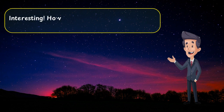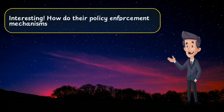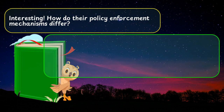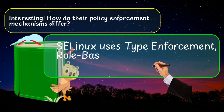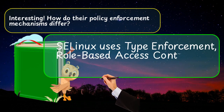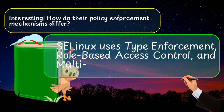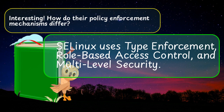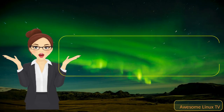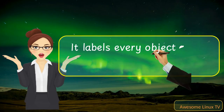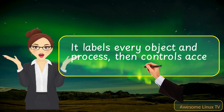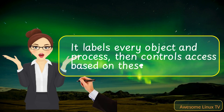How do their policy enforcement mechanisms differ? SELinux uses type enforcement, role-based access control, and multi-level security. It labels every object and process, then controls access based on these labels.